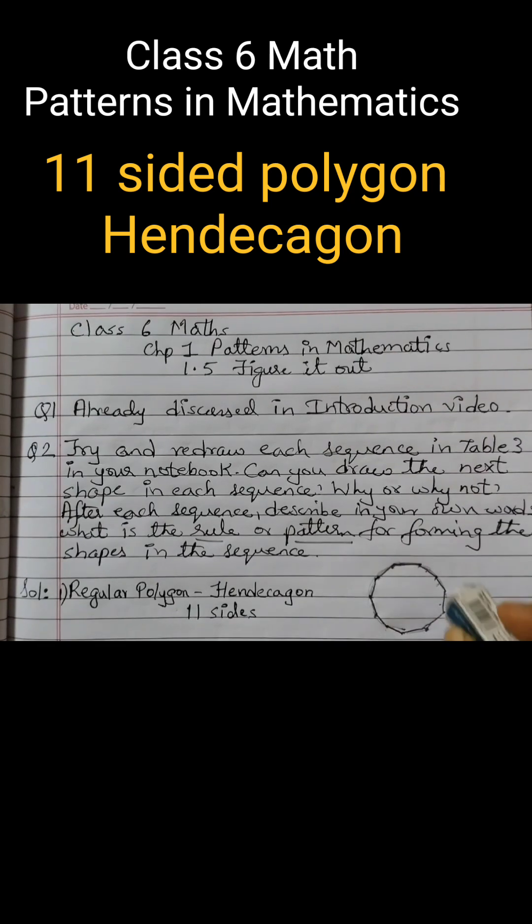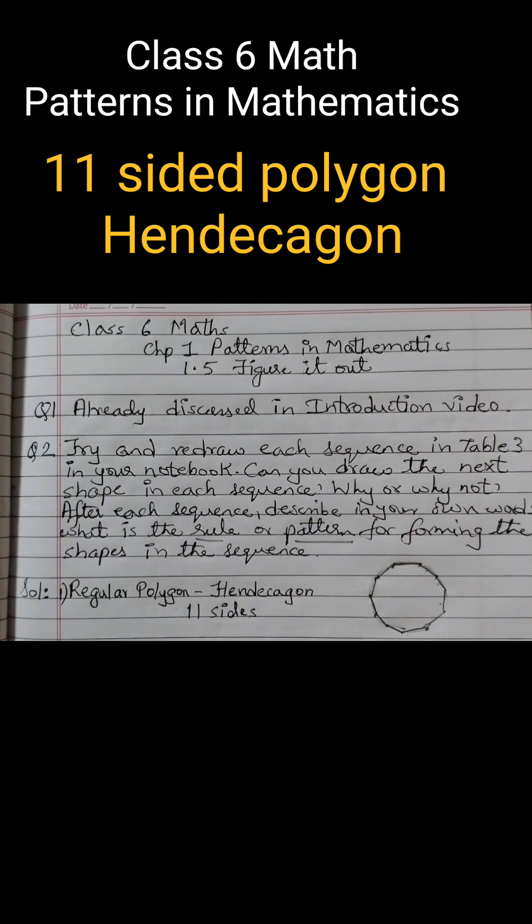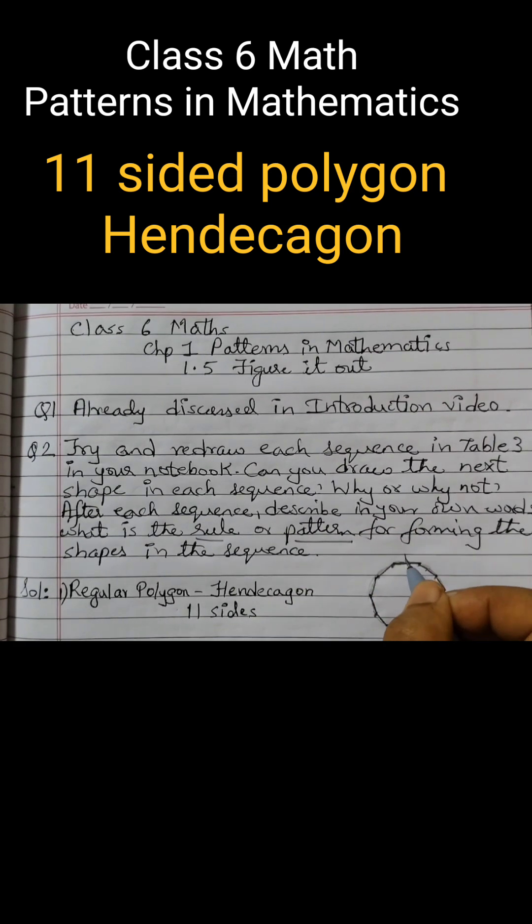Let's erase off these circle marks and let's see if you got 11 sides. 1, 2, 3, 4, 5, 6, 7, 8, 9, 10, 11.